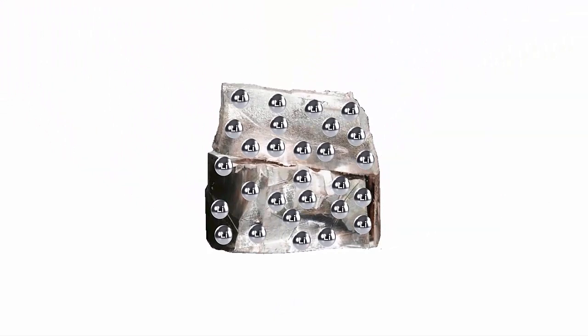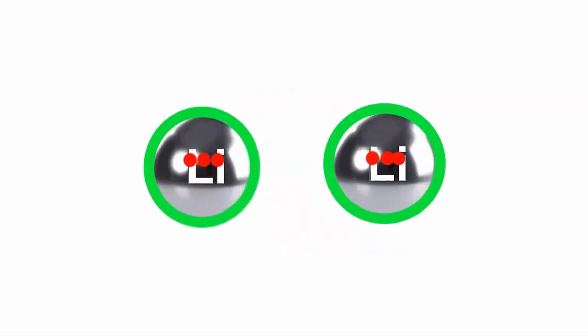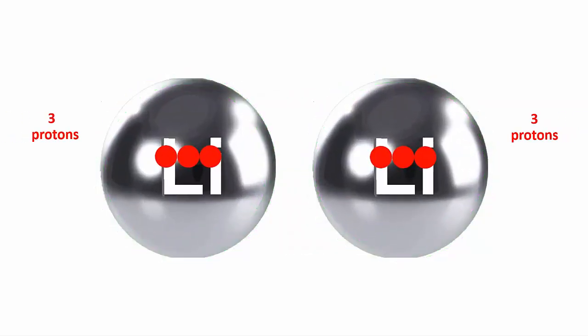In nature, a real lump of lithium would be made of many, many lithium atoms. All with three protons. Some of these have three neutrons. But other lithium atoms have four.